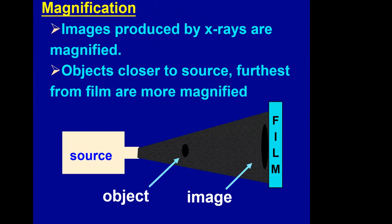Images produced by x-rays are magnified — and this is a very important point. Objects that are closer to the source and furthest from the film are more magnified. As shown on this diagram, you can see how the image is much larger when the object being studied is closer to the source and furthest from the film.